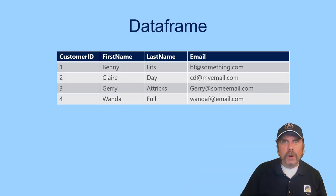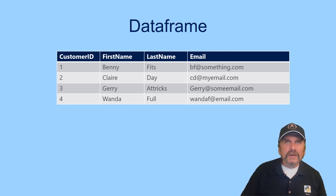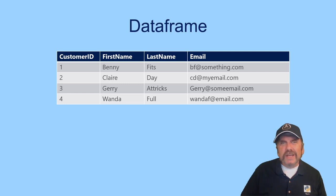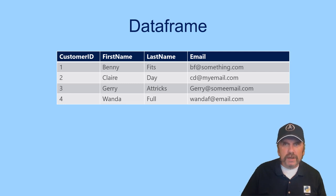I'll start by talking about what is a data frame. A data frame is really just like an in-memory table — like a SQL Server type of table that we just brought into memory. It's organized as rows of information and columns, and each column identifies a different type of data element. So if we want to do analysis on customers, we might have a data frame with customer ID, first name, last name, and email, and we can sort, slice, dice, group on it, etc.